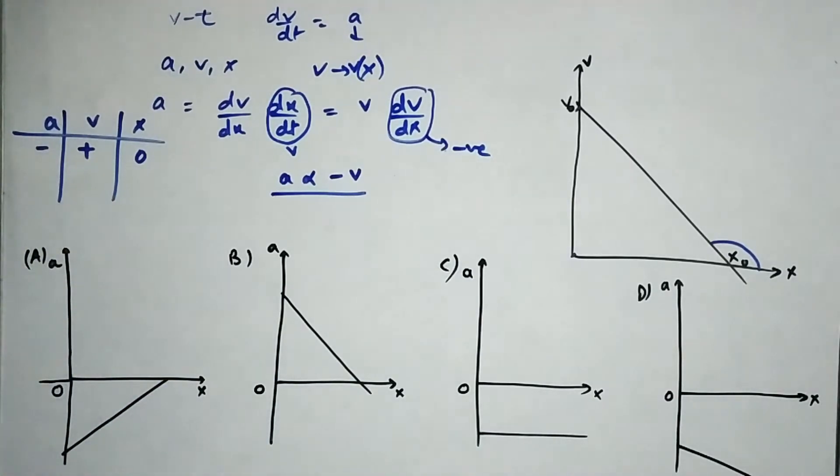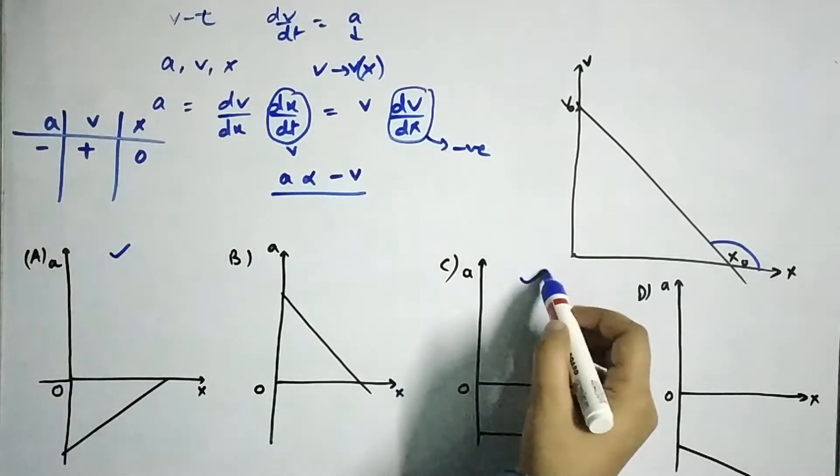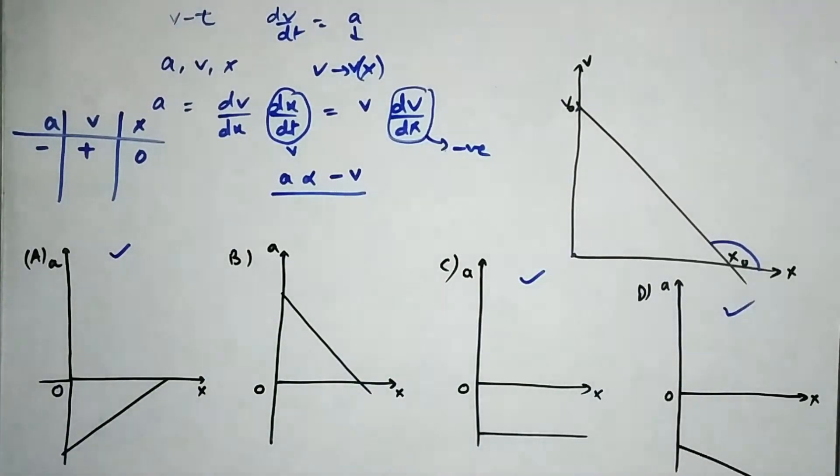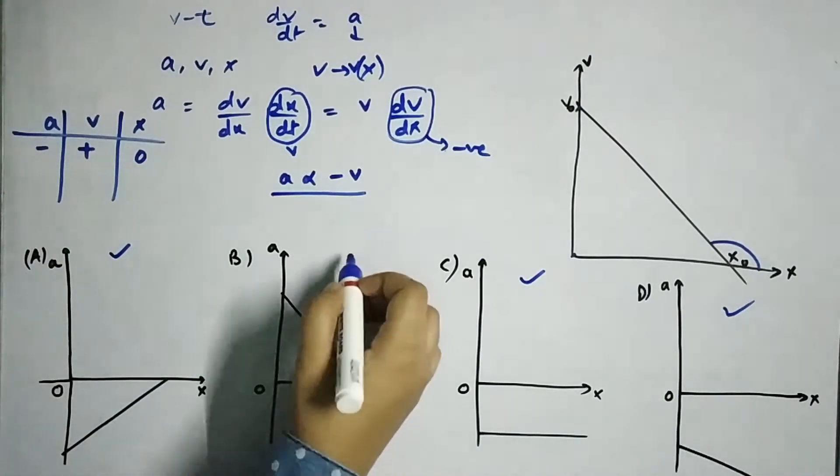Now which one amongst them will give a negative at x equals zero, that will be this, this as well as d. Okay, so this rules out this one.